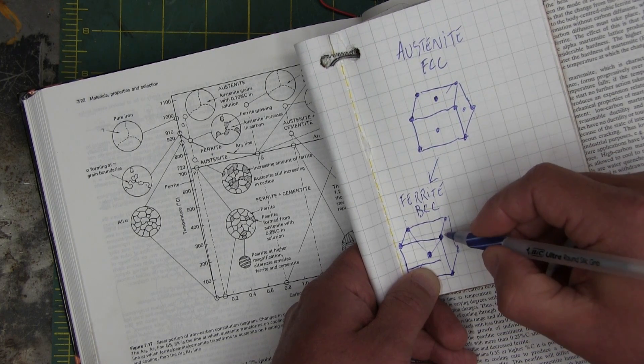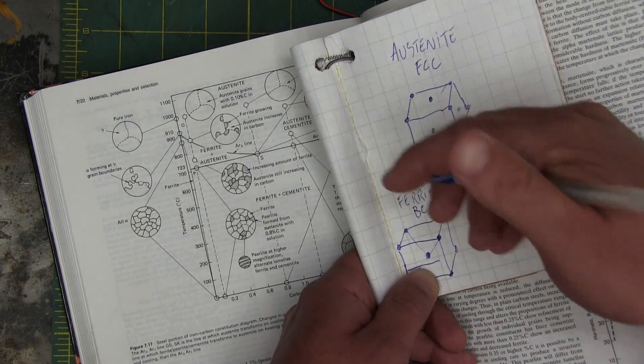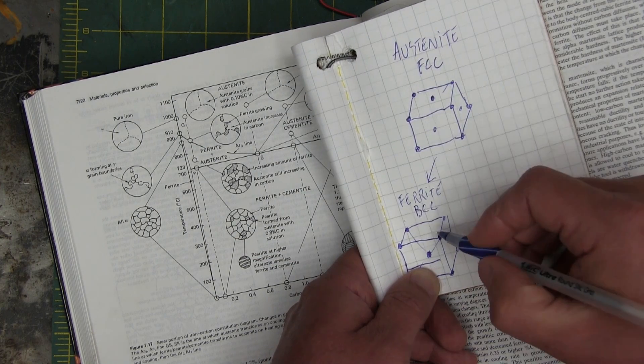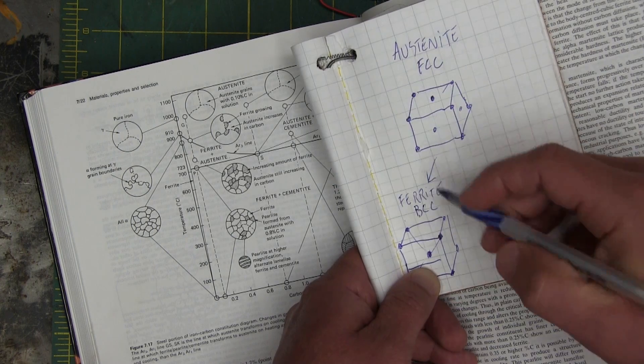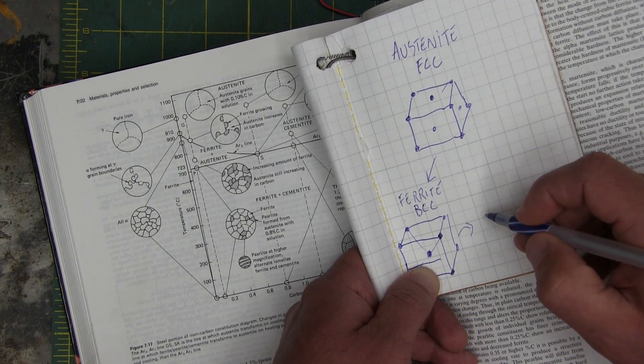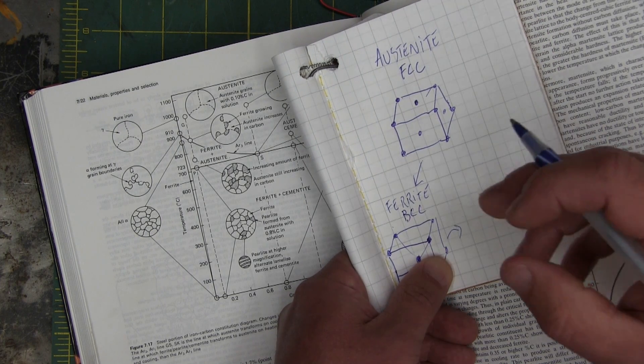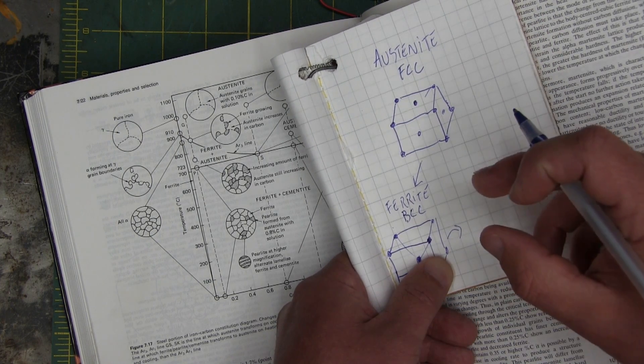So what happens is you have more carbon than you can dissolve, just like the salt in the water. It pops out and you get a tiny bit of cementite. What is cementite? It is iron carbide.